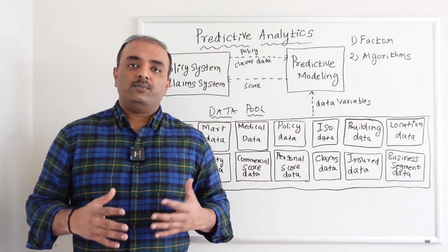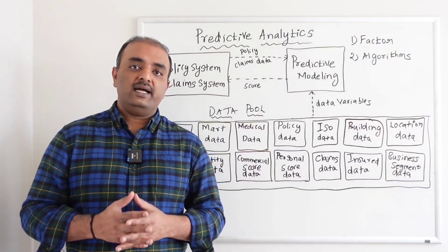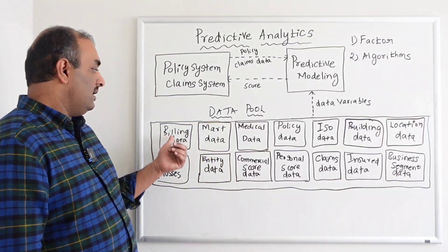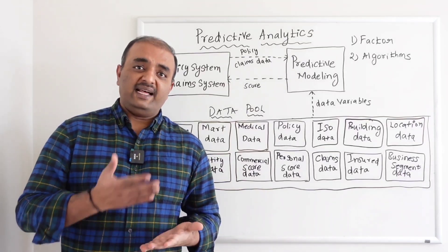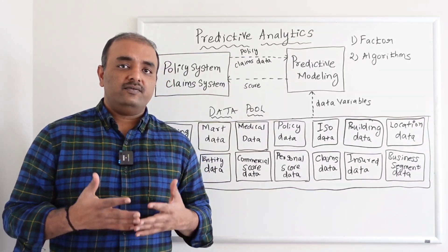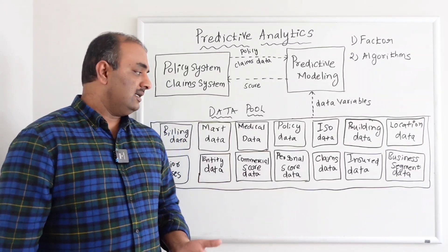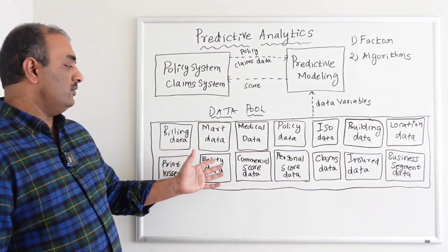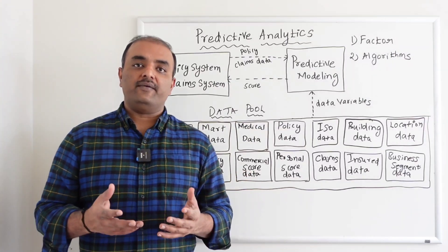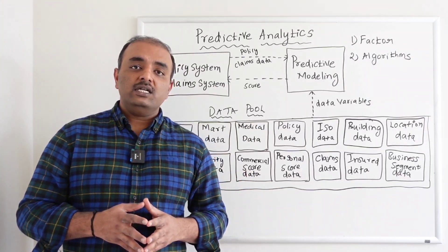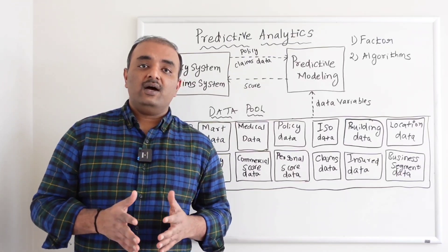The reason why they are trying to do is maybe when they try to start the project, they might have thought that relying on this data, billing data, or medical data may be more favorable to them. But as time grows, they might have felt, based on the data, that instead of billing data, if they had used this commercial curve score or entity data, that would have been more favorable. Then they do not need to do code changes again.